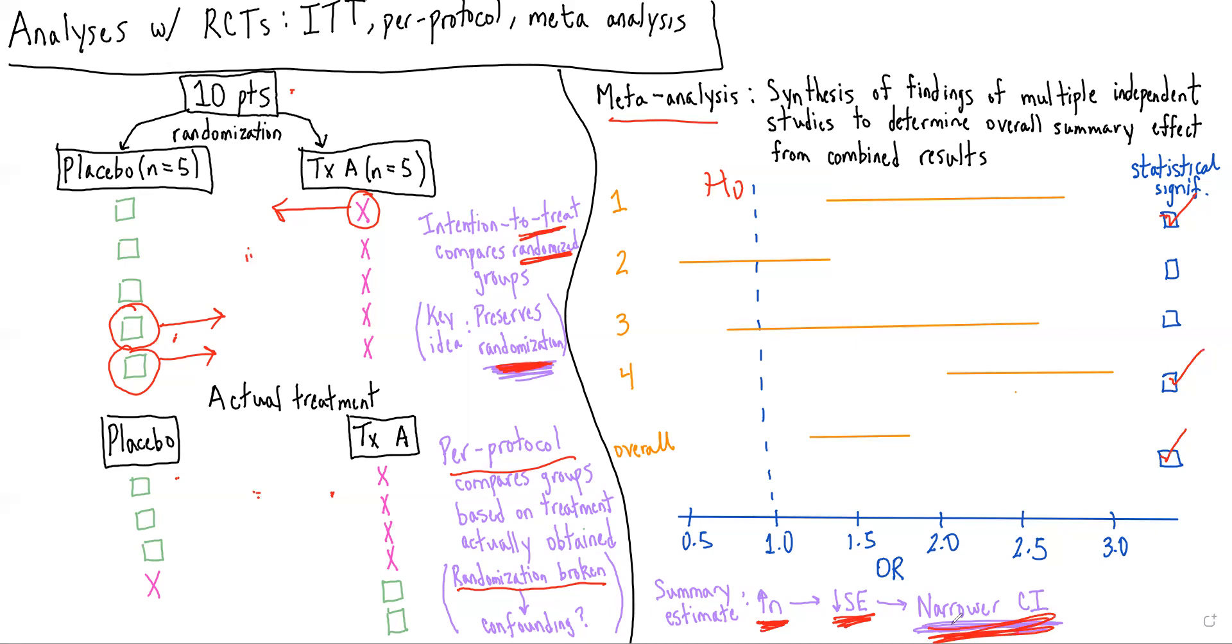And basically, this highlights that the benefit of a meta-analysis is that by combining the results of multiple studies, we're going to increase our overall sample size, which gives us greater statistical power. And in addition, it really just helps us to try to uncover what is the truth in this situation, because if different studies are coming up with different results, it's kind of unclear what we should truly be doing.